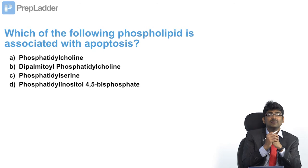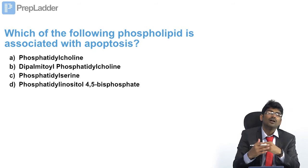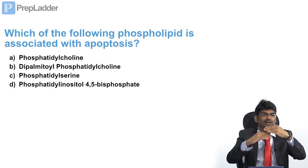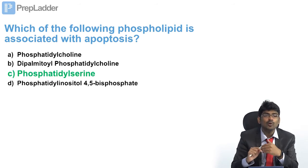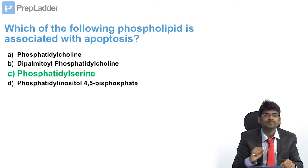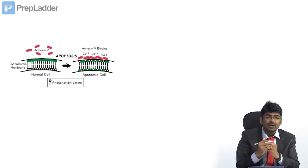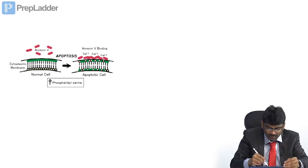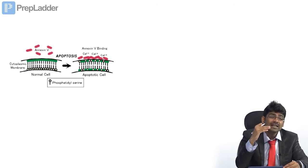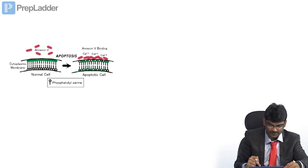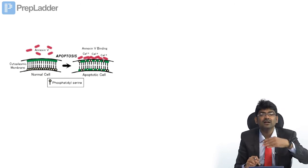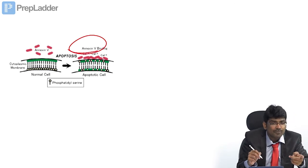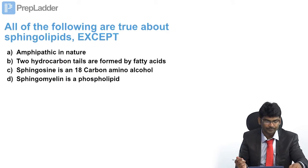Which of the following phospholipids is associated with apoptosis? Phosphatidylserine is present only in the inner leaflet of the plasma membrane. Flipping phosphatidylserine to the outer leaflet leads to apoptosis. Annexin 5 binds to calcium and phosphatidylserine residues — it is a marker of apoptosis. So another question: annexin 5 is a marker of apoptosis.